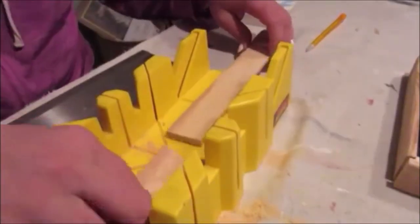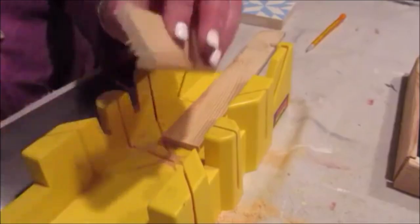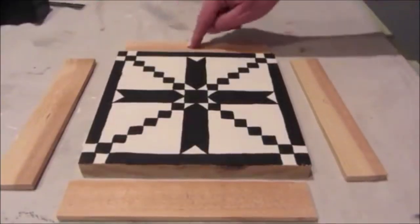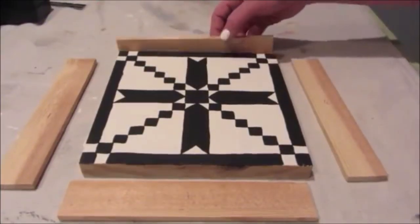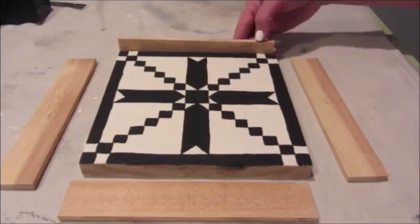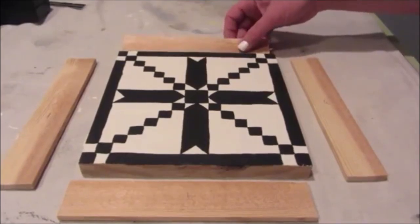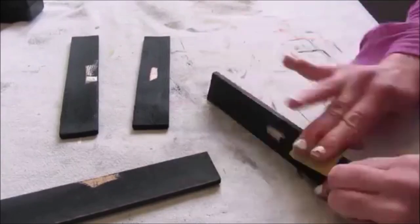I then continue to do the same thing for all the remaining three sides, making sure that I cut two pieces that were shorter in length and two pieces that were longer, which would overlap the two shorter pieces to form a frame.